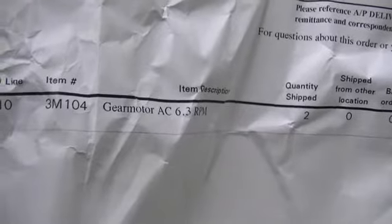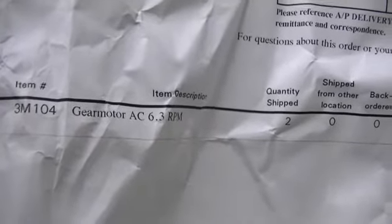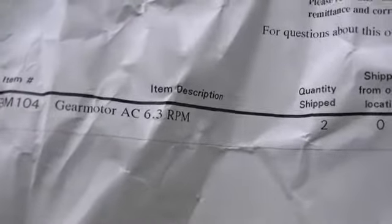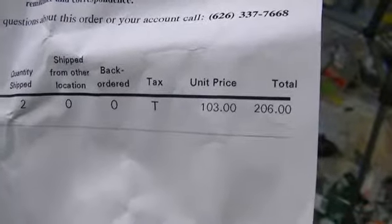There's the actual part number, 3M, as in Mary, 104. It's the gear motor AC 6.3 RPM. I got two of them, and so that brought the total to $206.